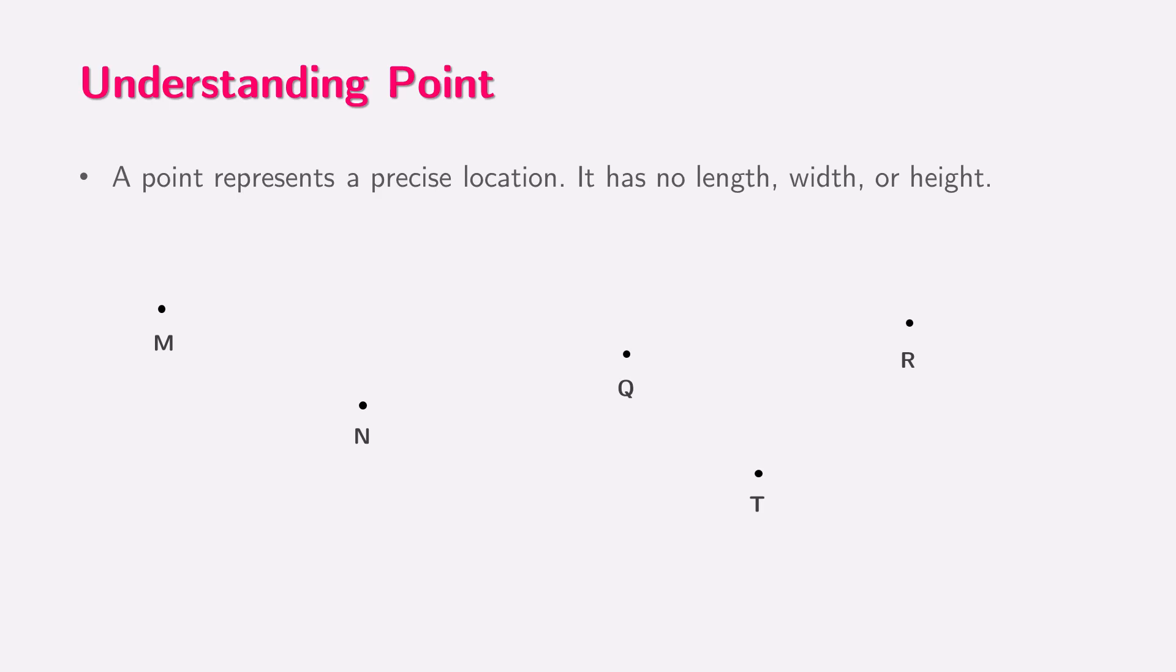Now, let's explore how we can name and identify points on a piece of paper. If you mark some points, you may need to distinguish between them. To do this, we use single capital letters like M, N, Q, T, or R. For example, these points can be read as point M, point N, and point Q, and so on. These dots represent precise locations. Even though we can see them as small marks on the screen, we must imagine them to be invisibly thin.